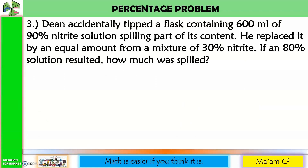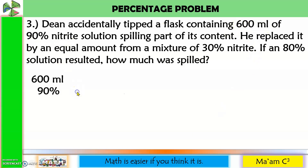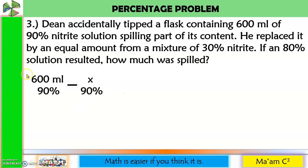Dean accidentally tipped a flask containing 600 ml of 90% nitrite solution, spilling part of its content. He replaced it by an equal amount from a mixture of 30% nitrite. If an 80% solution resulted, how much was spilled? Initially we have 600 ml of 90% nitrite. The spilled amount is unknown, so we subtract X. Since it came from the original solution, its concentration is also 90%.